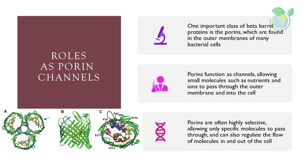One important class of beta-barrel proteins is the porins, which are found in the outer membranes of many bacterial cells. Porins function as channels, allowing small molecules such as nutrients and ions to pass through the outer membrane and into the cell. Porins are often highly selective, allowing only specific molecules to pass through, and can also regulate the flow of molecules in and out of the cell.